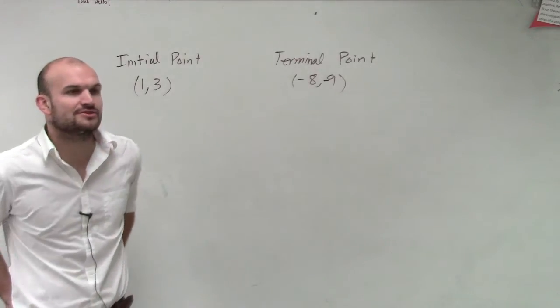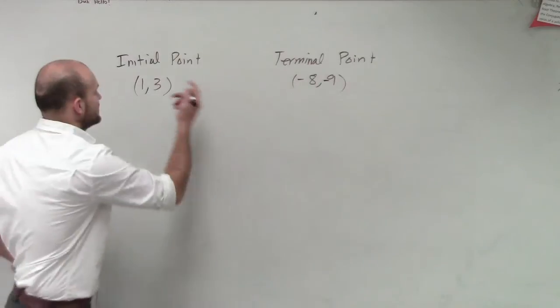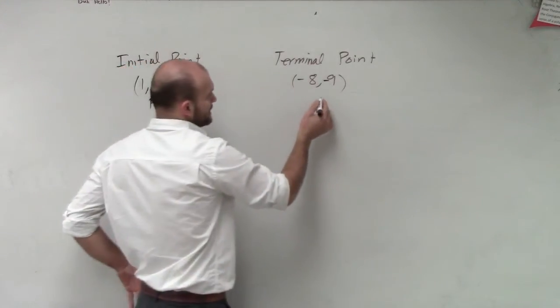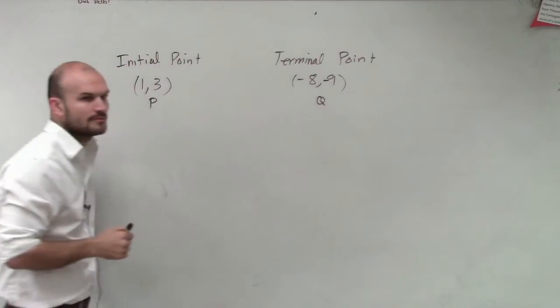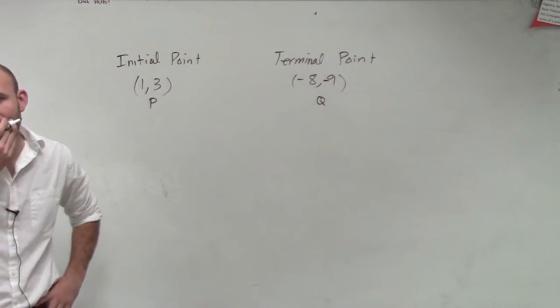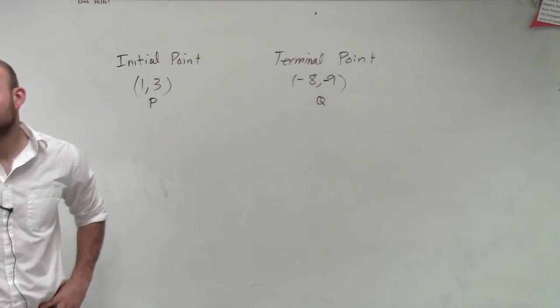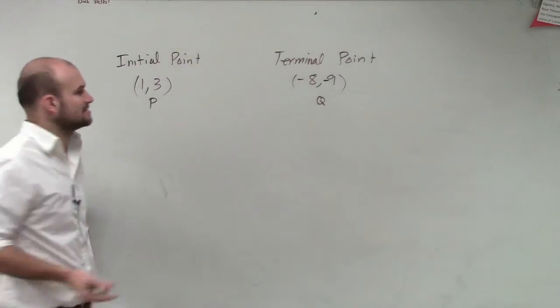Now remember, what we've talked about so far with directed line segments is we can call our initial point P and our terminal point Q. So let's just go and get a, they're not asking us to provide a graphical analysis of what this graph looks like, but let's just go and do that for fun.